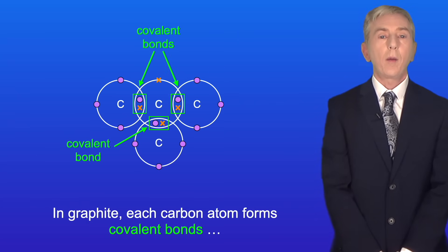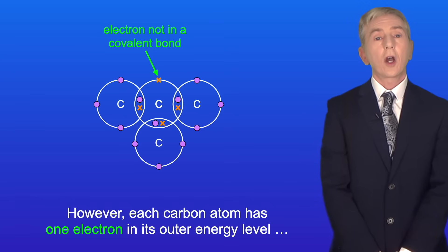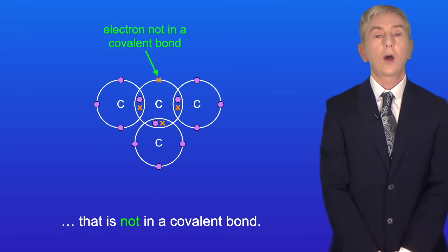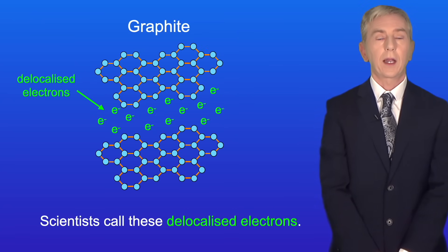In graphite each carbon atom forms covalent bonds to three other carbon atoms like this. However each carbon atom has one electron in its outer energy level that is not in a covalent bond. These electrons are released from the carbon atoms and scientists call these delocalized electrons.